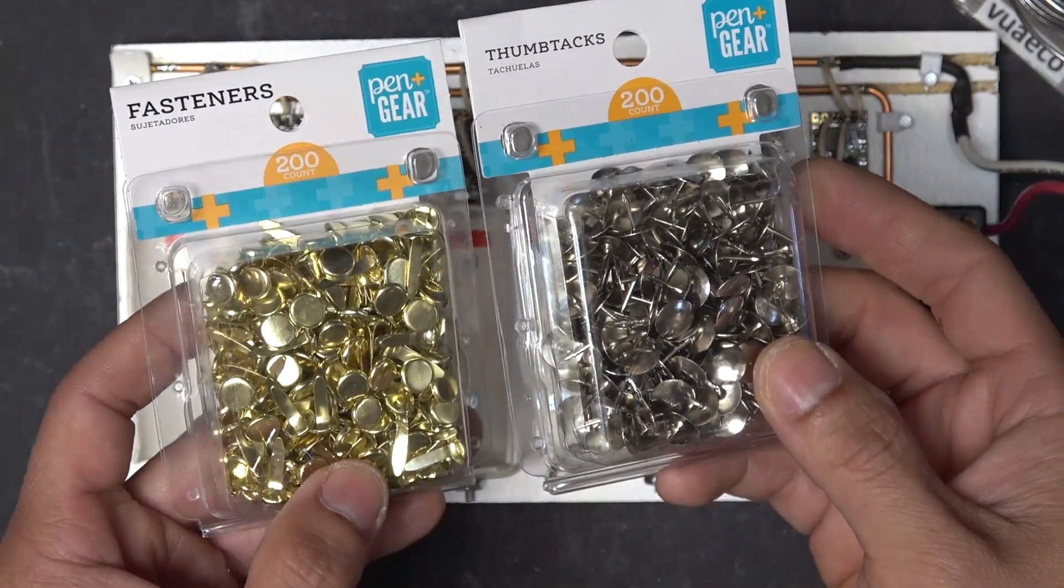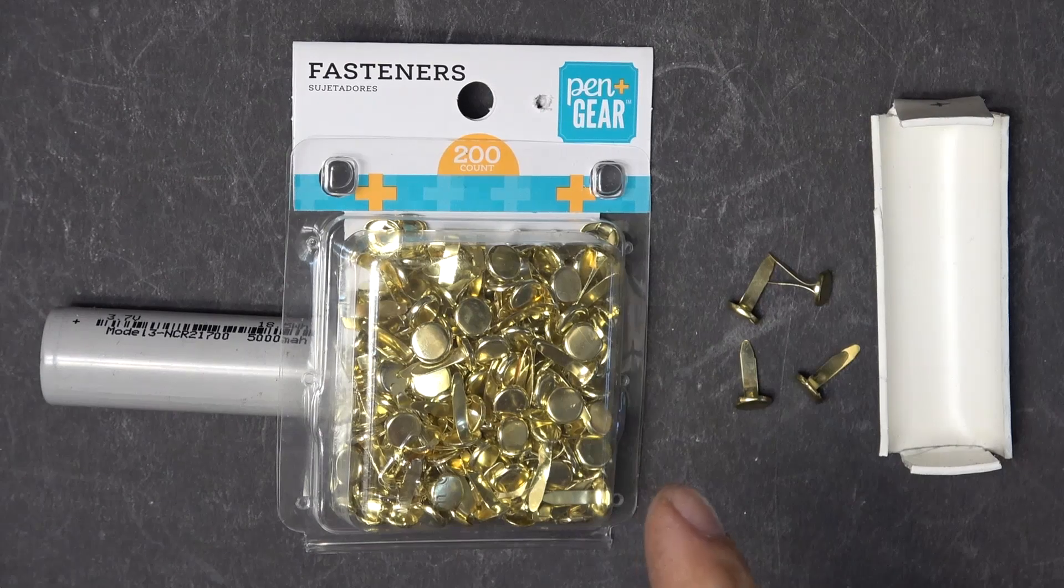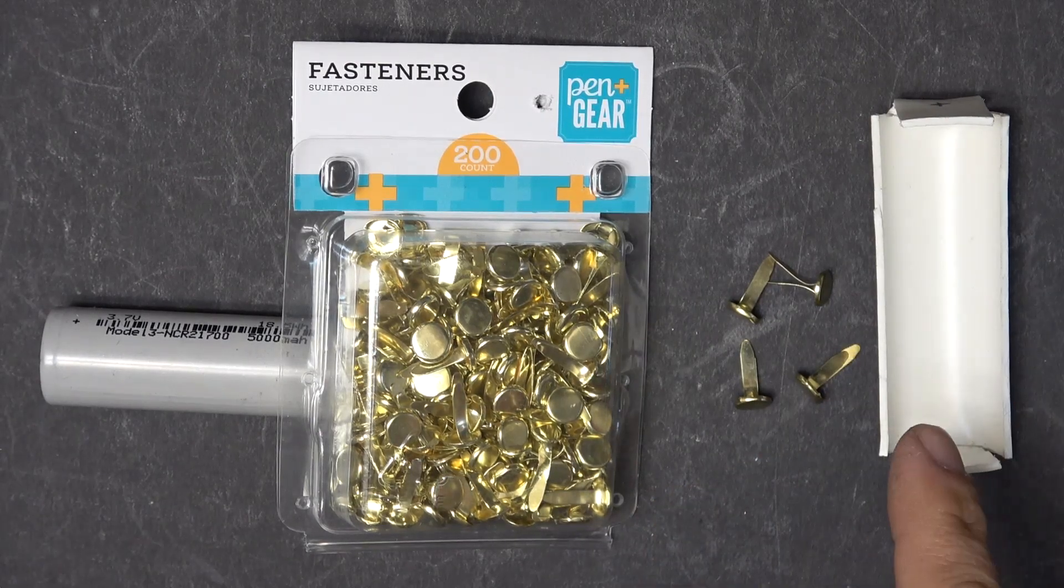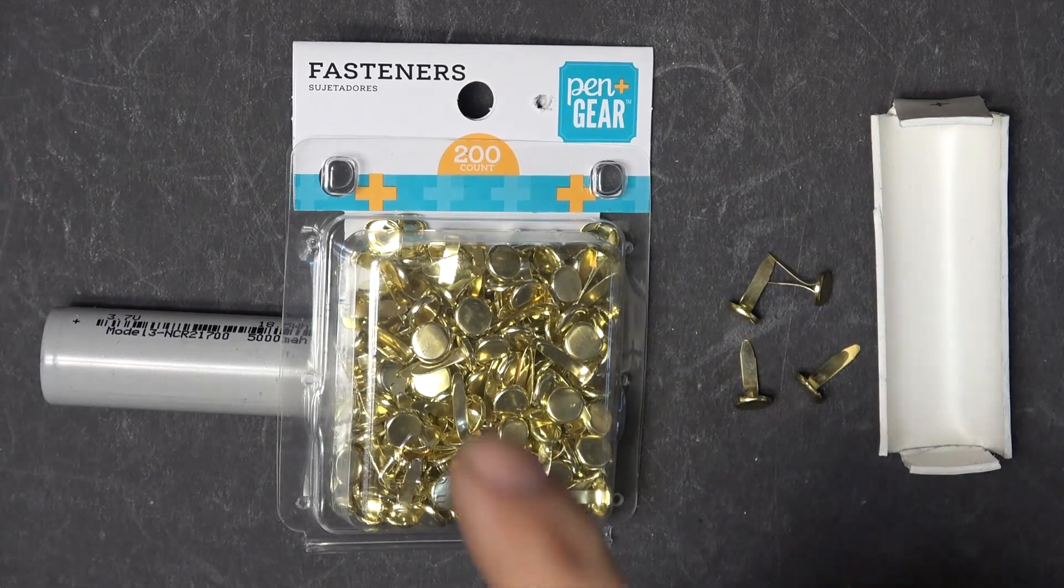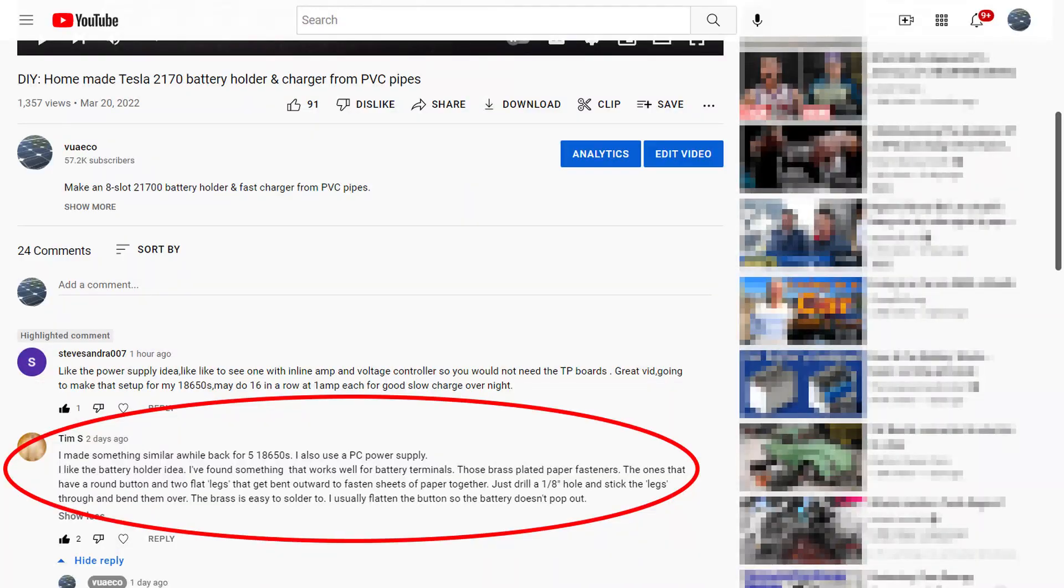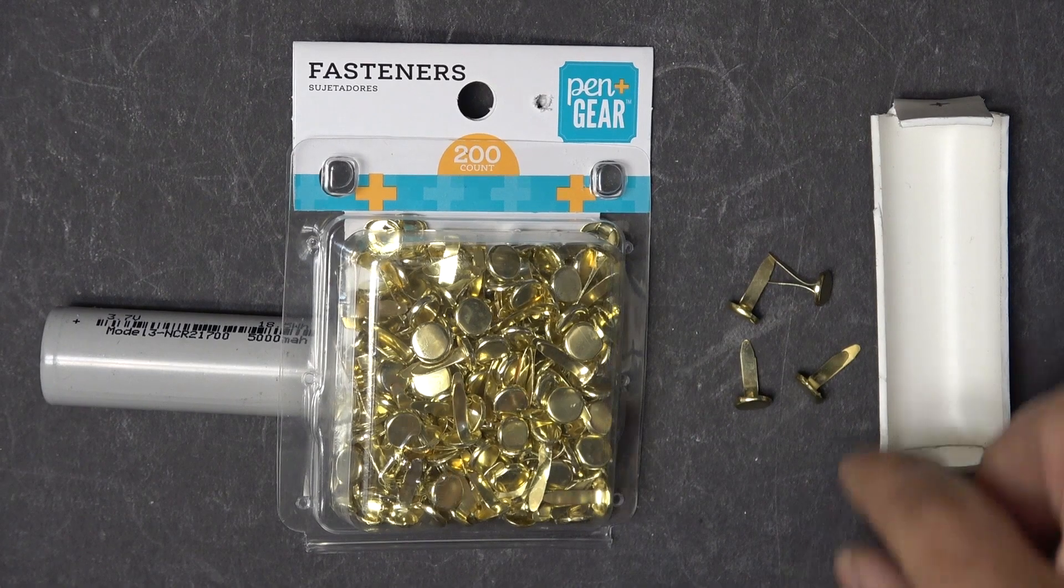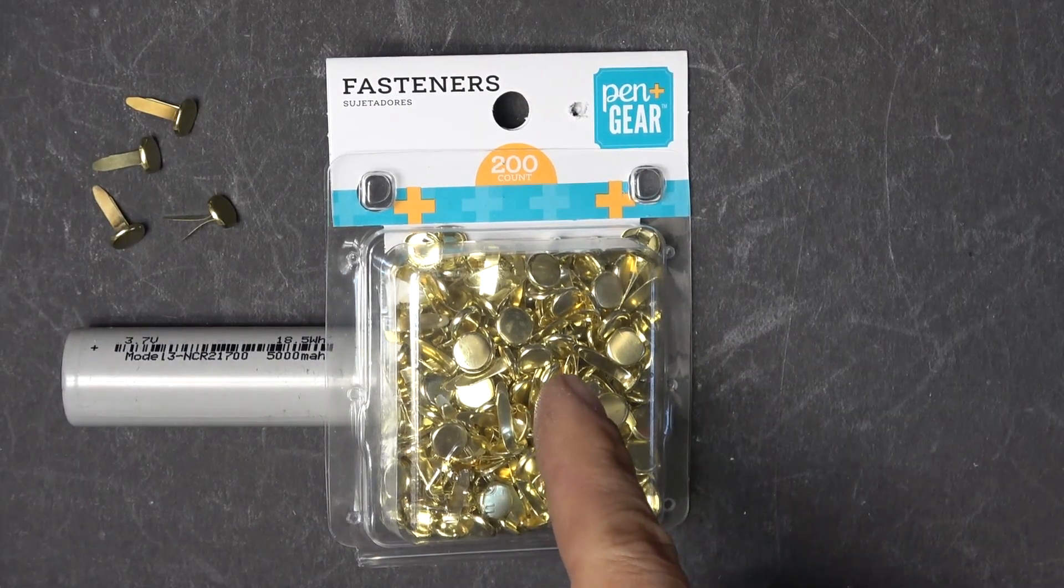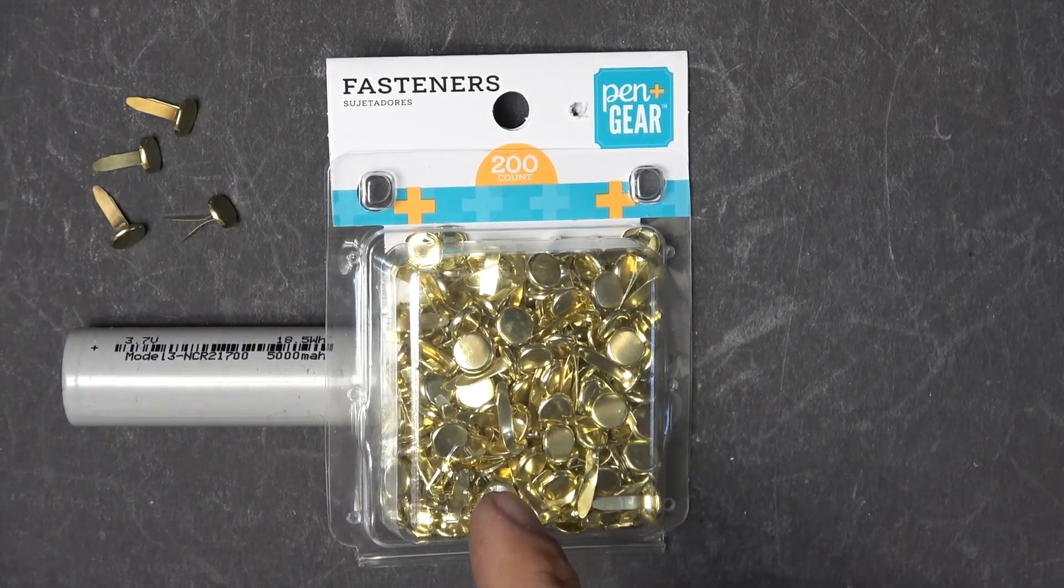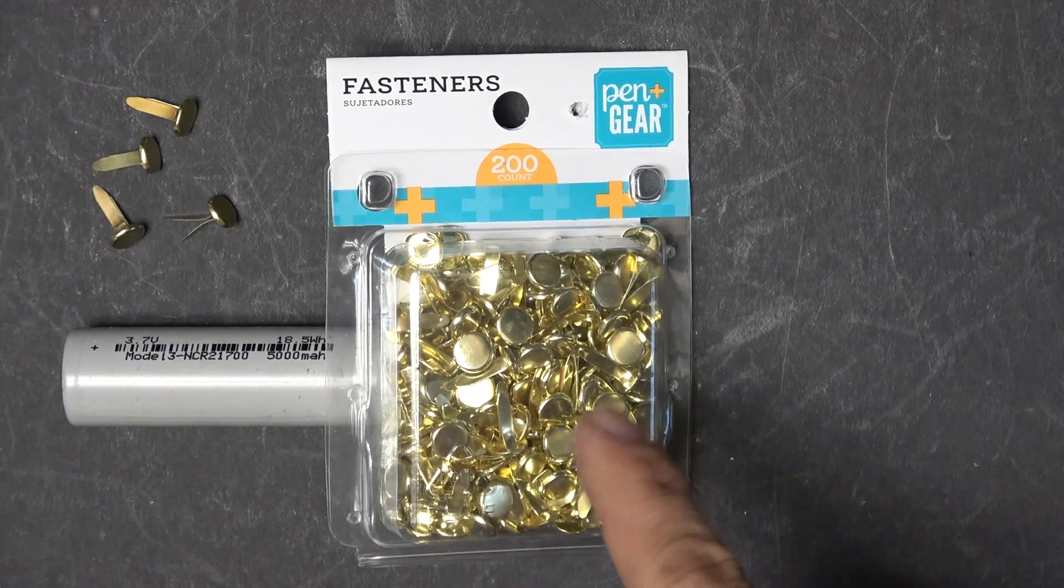The second method to make battery terminals is to use paper clips like these. This is actually not my idea, this is from one of my subscribers from my previous video and he suggested using one of these paper clips. I bought this from Walmart, it cost me $2.50 for this package. There are 200 of these in this package.